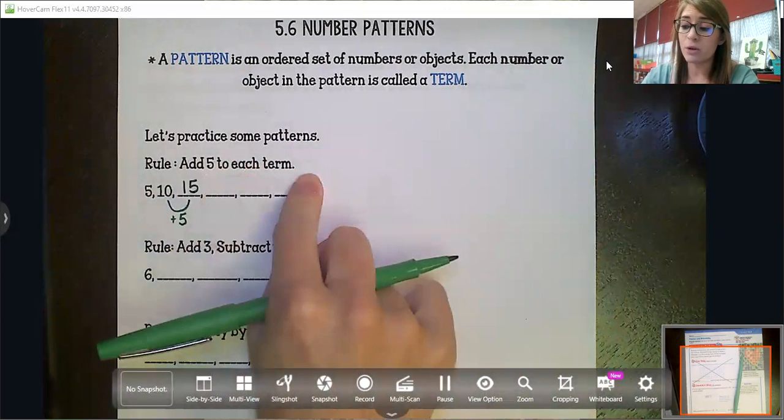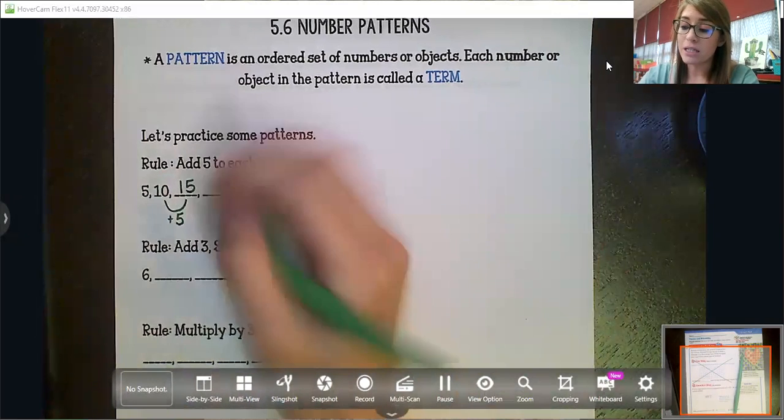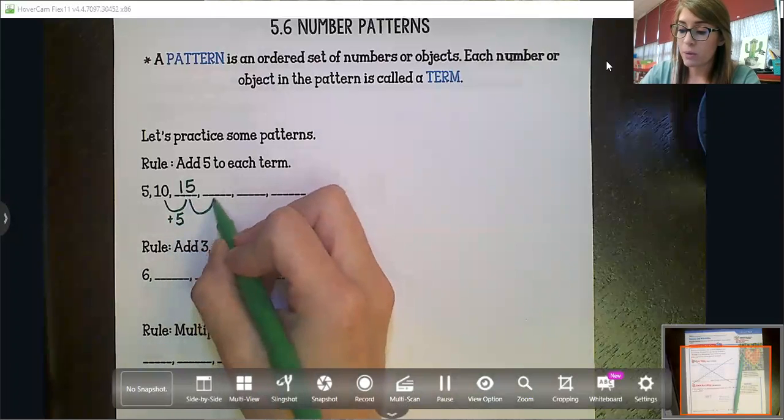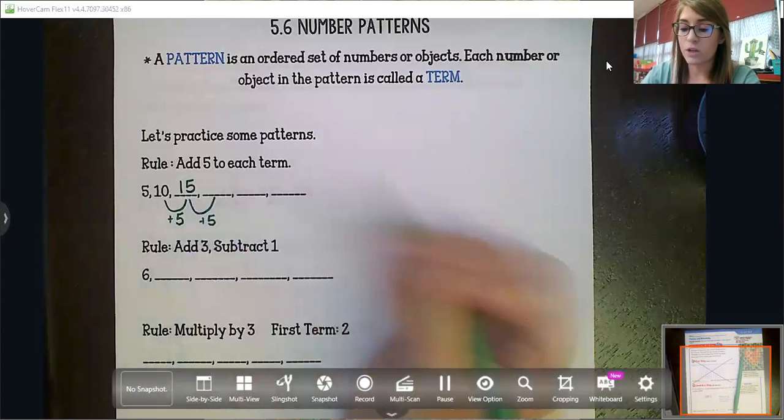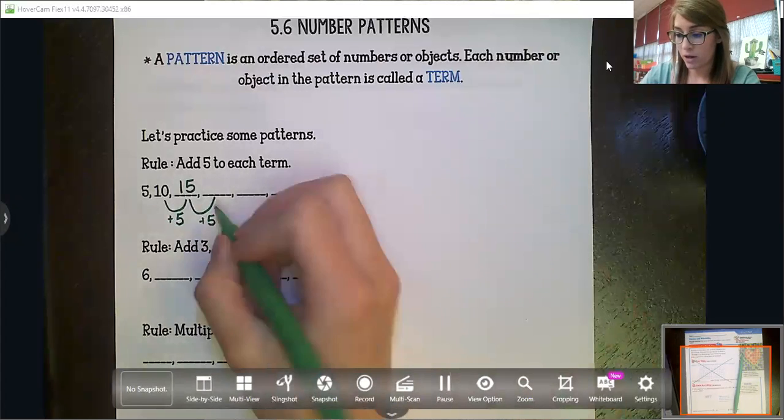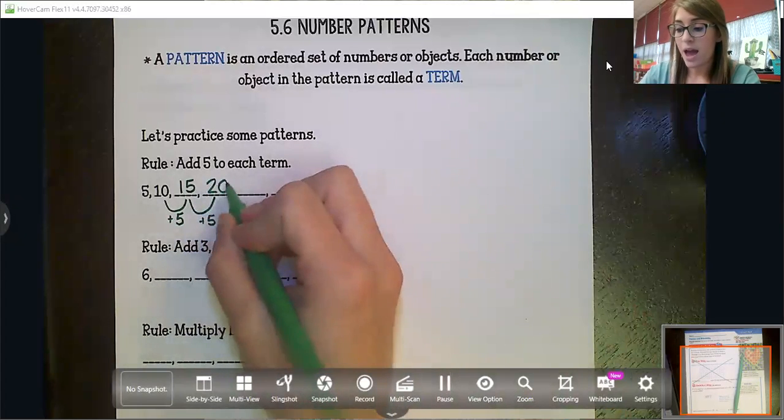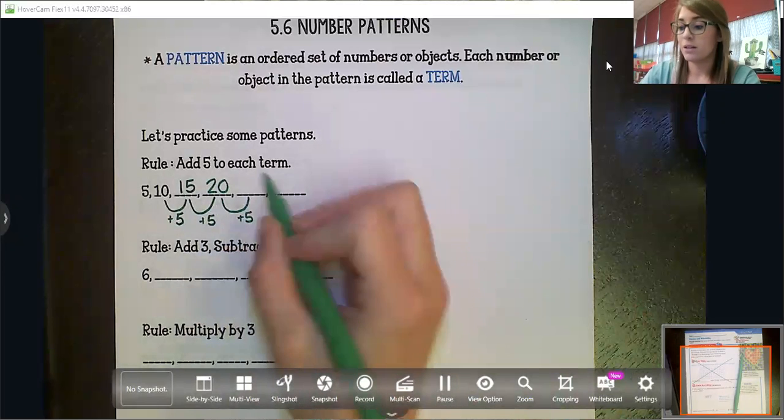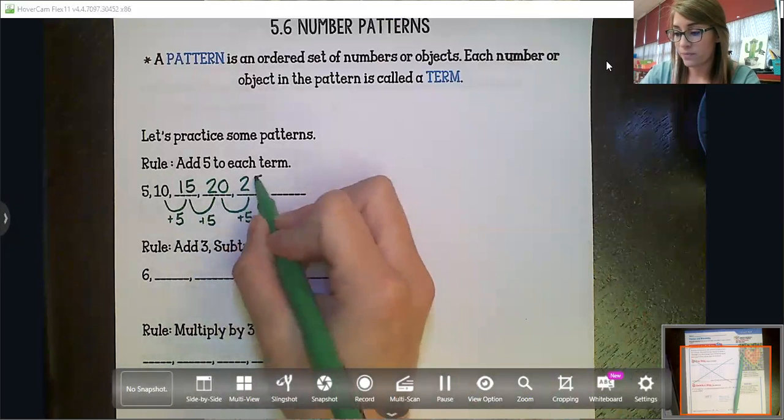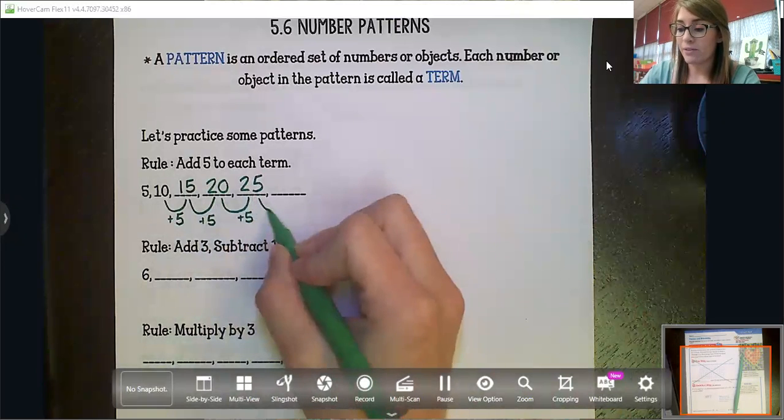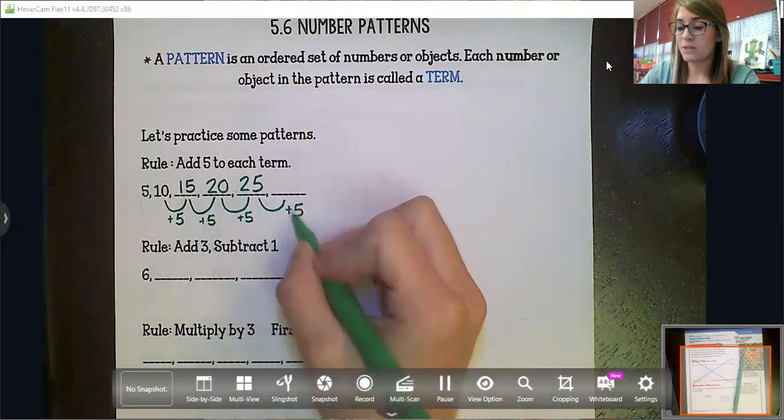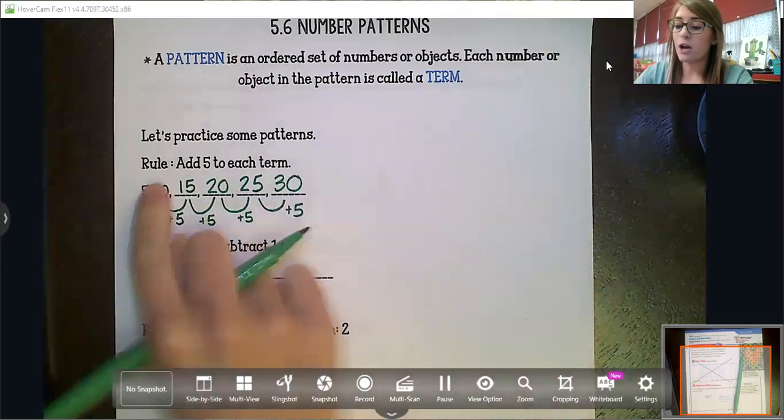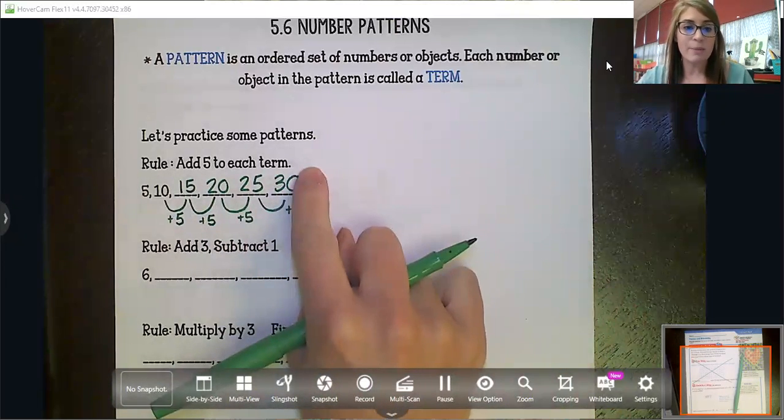And then we're going to continue that pattern, that rule, until we get to our last place they want us to have a digit. So then we would do 15 plus five, which is twenty. And then we would add five more. Twenty plus five is twenty-five. And then we would add five more and twenty-five plus five is thirty. So there's one example of a way we can find a pattern.